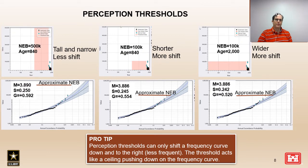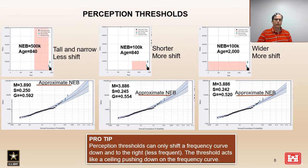Here's another set of examples to demonstrate the influence of perception thresholds. We compare three different analyses for a perception threshold with different magnitudes and ages. In the far left plot we have a very high magnitude of 500,000 CFS relative to a short age of 840 years, resulting in very little effect on the computed frequency curve. In the middle plots we've reduced the magnitude to 100,000 CFS keeping the age at 840 years, resulting in more of a shift to the right of the computed frequency curve, reflected by a reduction in the skew parameter and standard deviation.